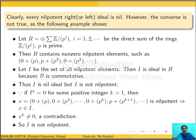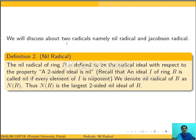Now we are ready to define nil radical. The nil radical of a ring R is defined to be the radical ideal with respect to the property that a two-sided ideal is nil. That is, nil radical of R will be a two-sided ideal which is nil, and if there is any other two-sided nil ideal of ring R, then it will be contained in the nil radical of R. We denote the nil radical of R by n(R).